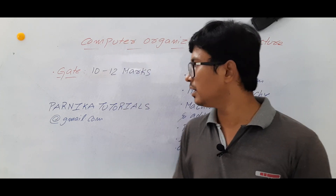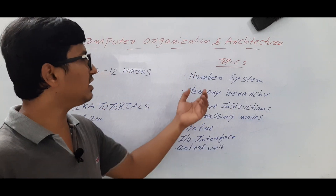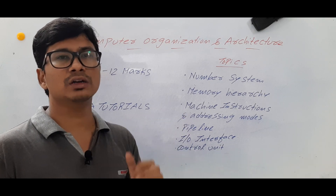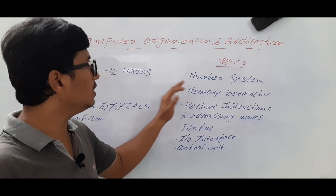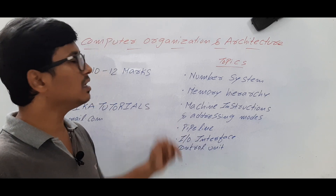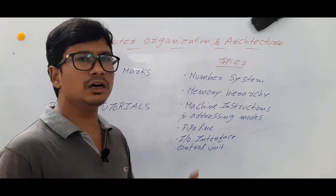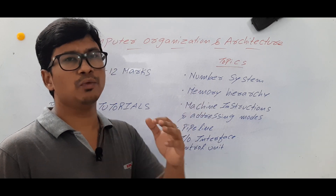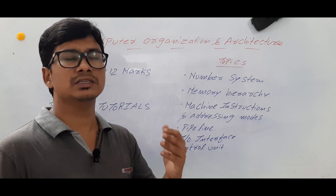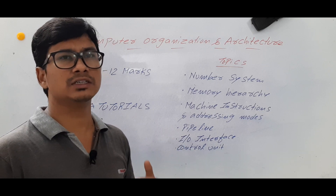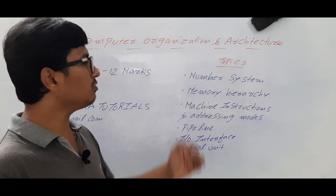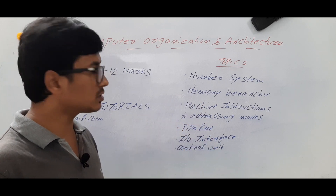Coming to the topics I will discuss: I will cover the number system, including binary to decimal, decimal to binary, and octal to hexadecimal conversions. Then we will discuss floating point number representation and Booth's algorithm. After that, I will discuss the memory hierarchy — how memory is organized, what cache memory is, and mapping techniques like direct mapping, associative mapping, and set-associative mapping. We will also cover cache replacement techniques like FIFO, LRU, and LFU.